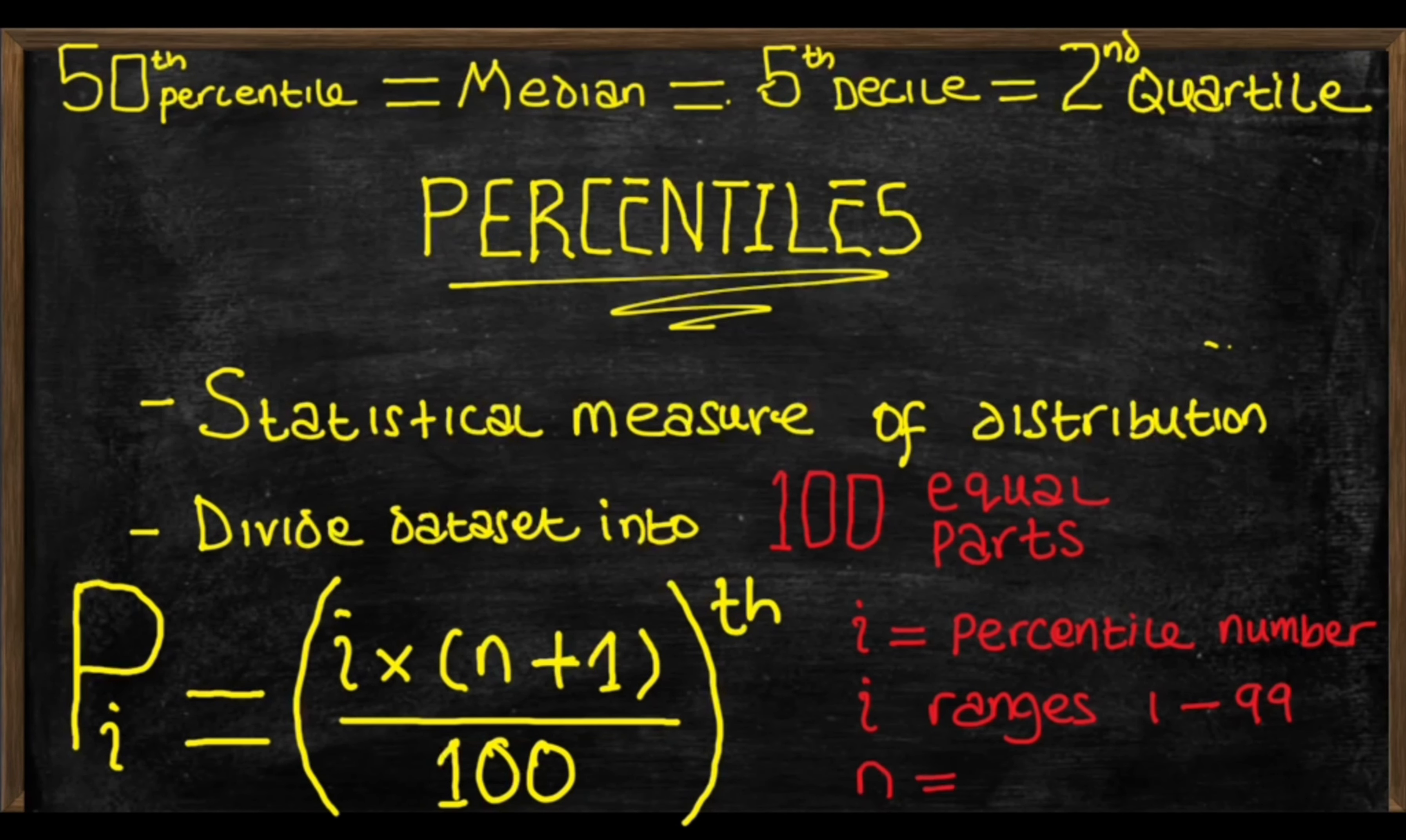While n is the number of data points in the data set. Please note that when we're using this formula, what we get is the position of the percentile and that's why the formula has th as a superscript, meaning position. With the position obtained from the formula, we can now get the actual data value for the percentile by looking at the data set.